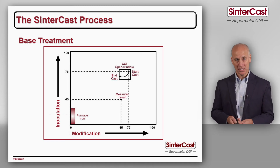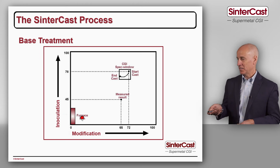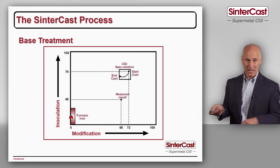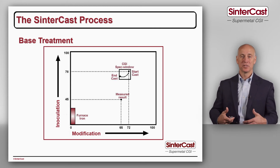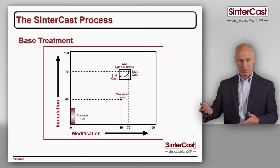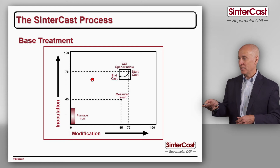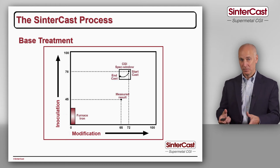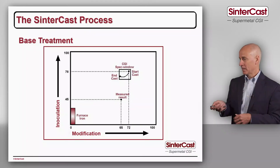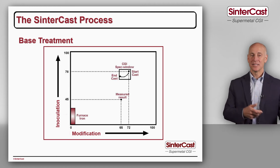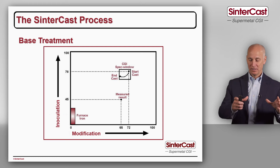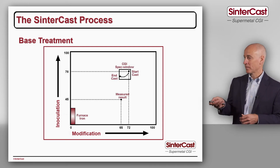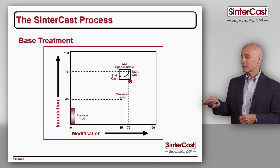In terms of the process, the iron in the melting furnace doesn't have any inoculant or magnesium. We make the base treatment — adding the first amount of magnesium and inoculant — and the iron jumps up somewhere on the chessboard. Every ladle will land at a different point; that's normal variation in the foundry process. After the base treatment, we take our sample, and at the end of the analysis we determine the inoculant level and the modification level. For each casting, we identify the size and location of the specification window, and the center-cast philosophy is to always start the casting in the top right corner of that window.